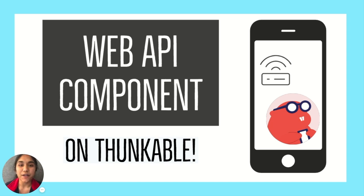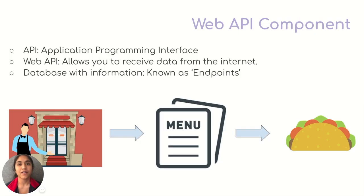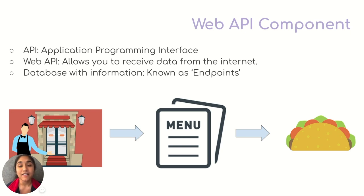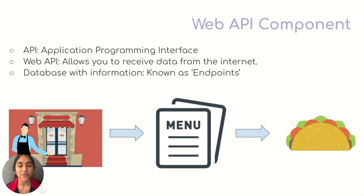Hi Thunkers, this is Simran from Thunkable and welcome to another video in the series where we learn how to use web APIs. So what is an API? API stands for Application Programming Interface and it allows your app and another data source to talk to each other. The web API component allows you to get data from any public or private data source on the web.